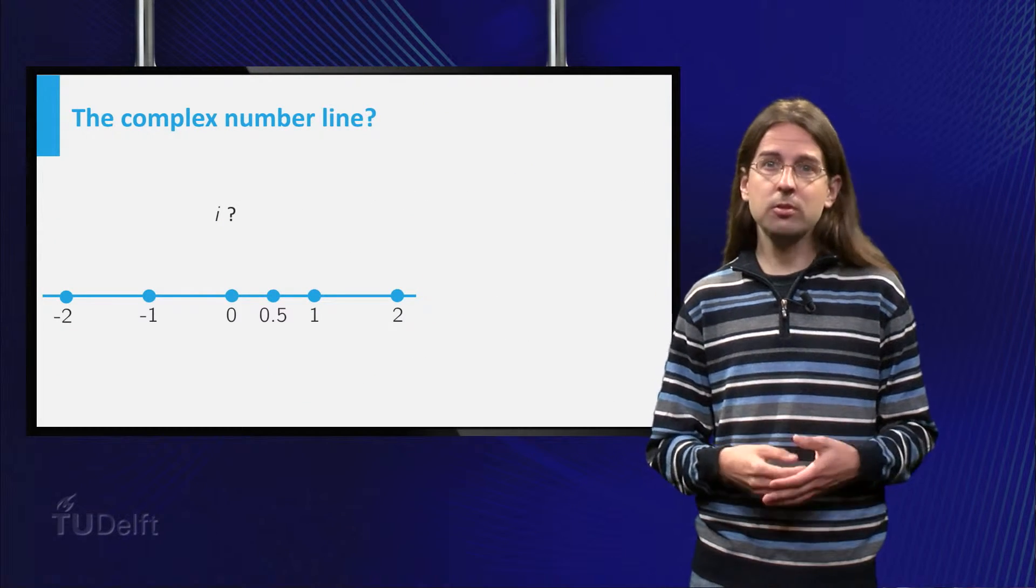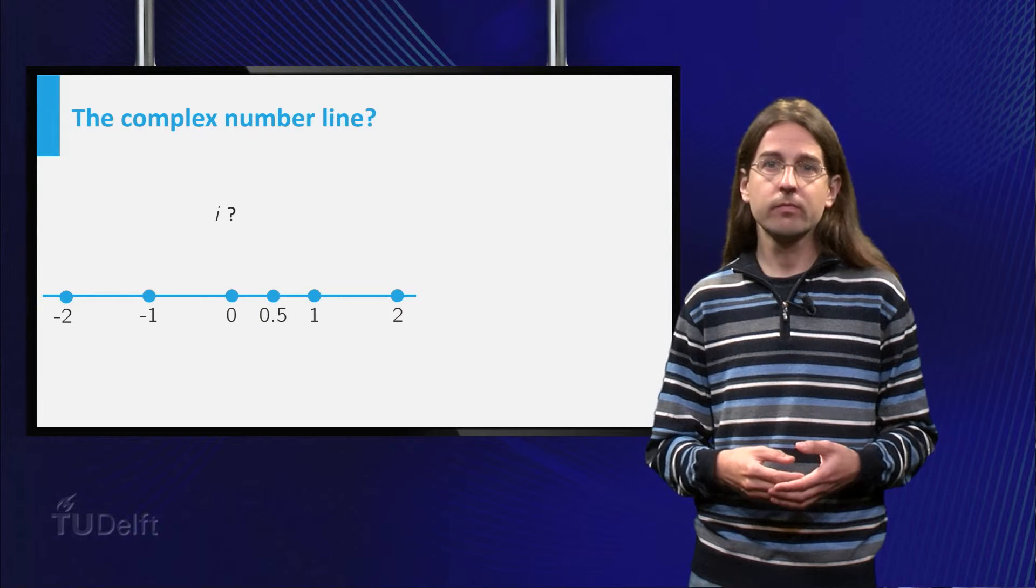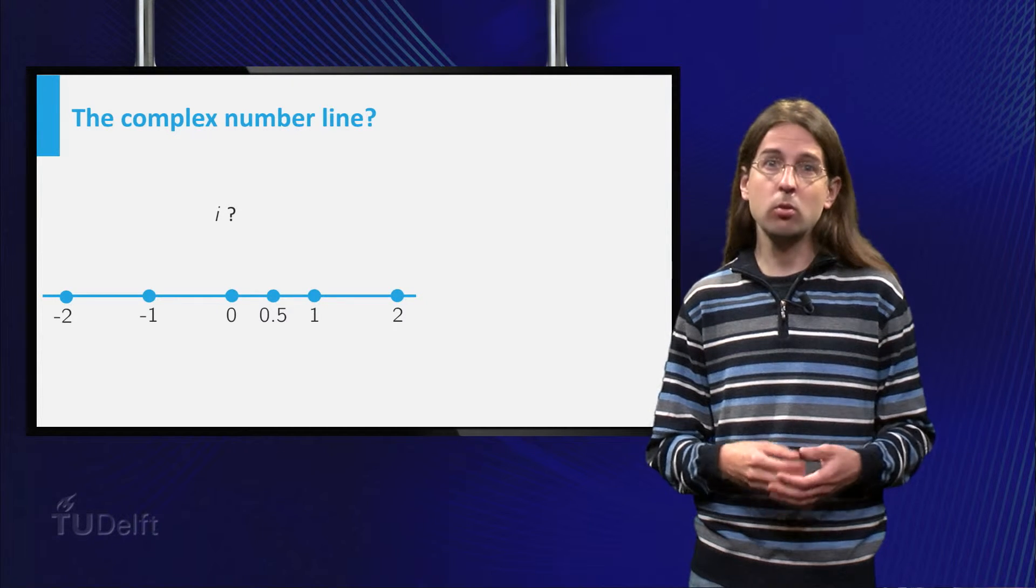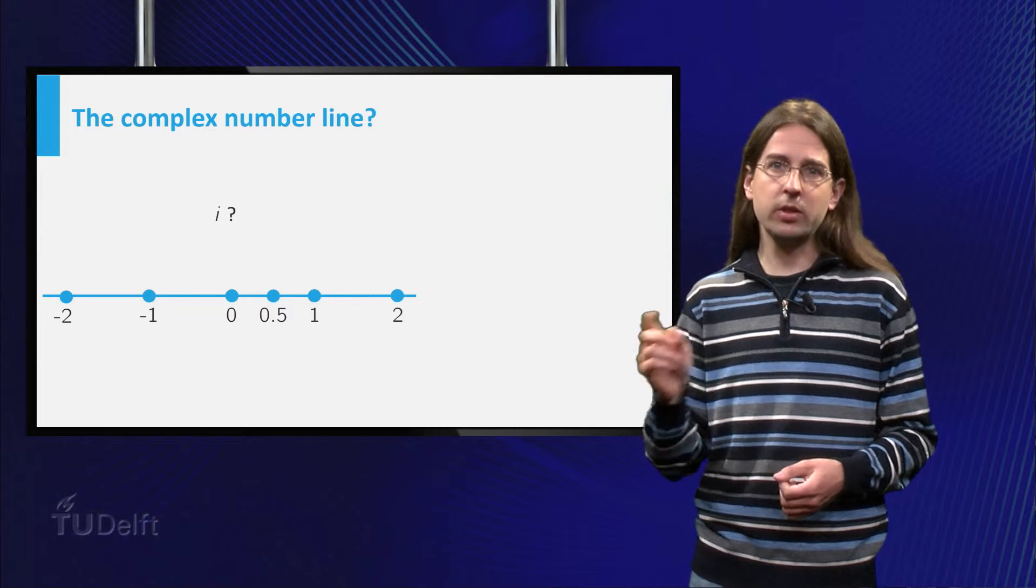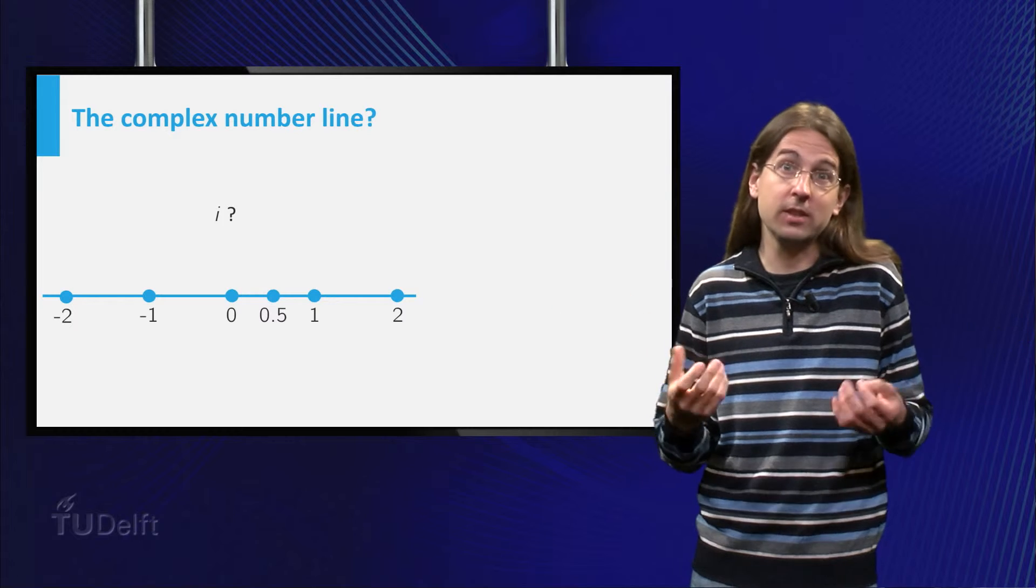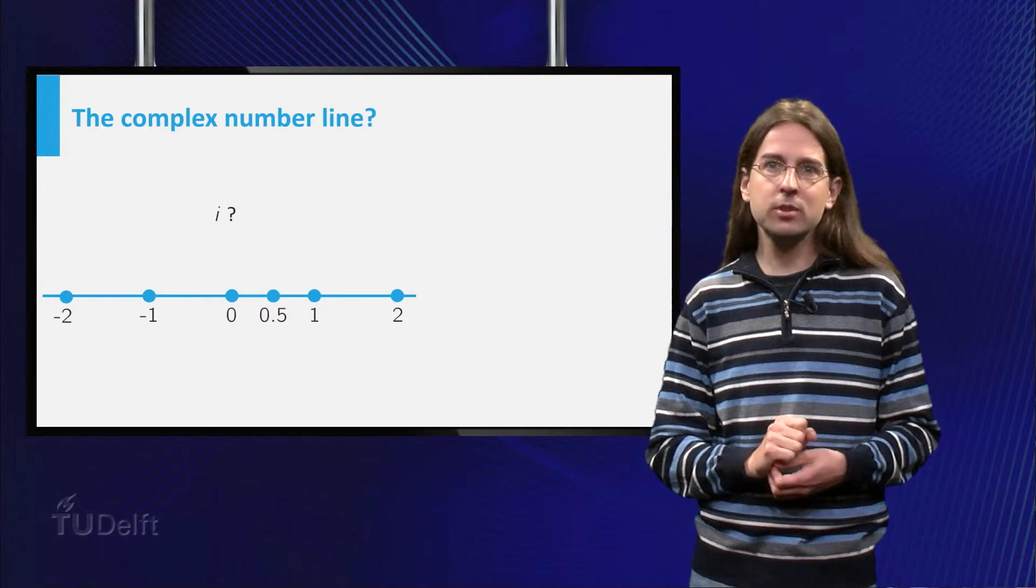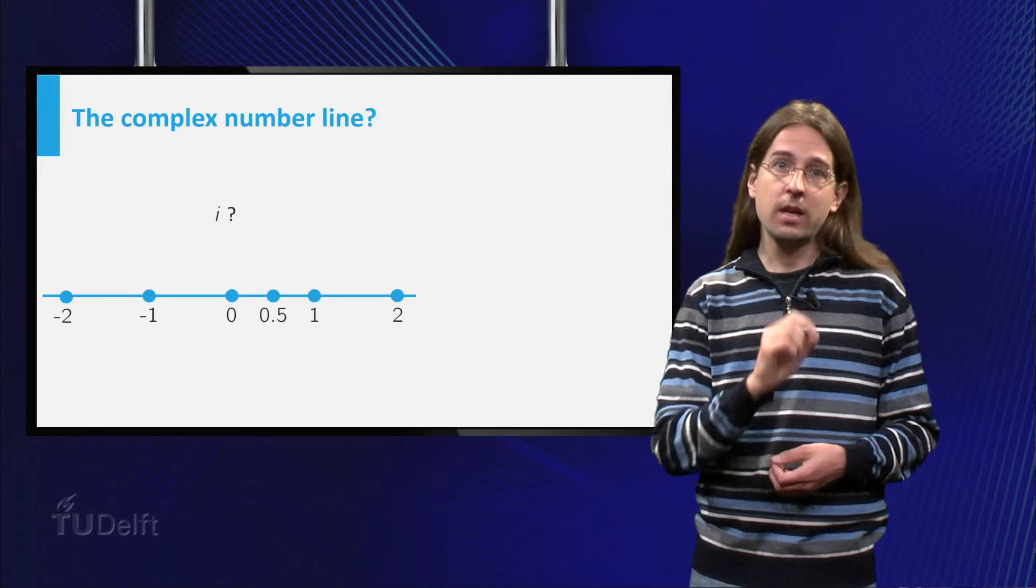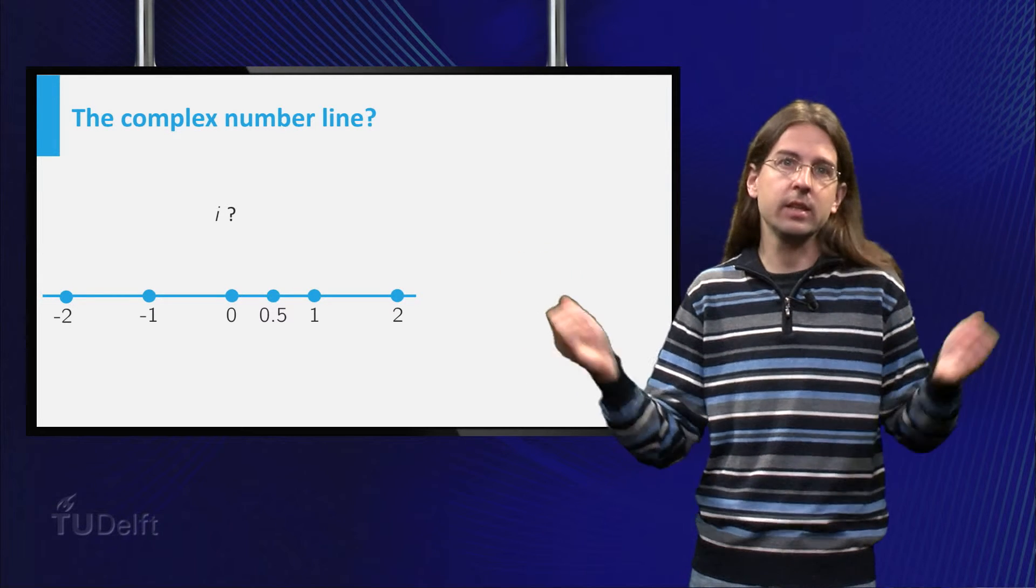Let us now try to find a visual way of thinking about complex numbers. You know that you can use the number line to represent all real numbers. Every real number has a spot on this line. Zero is in the middle, not so far as an infinite line has a middle. One is slightly to the right of zero, minus one slightly to the left of zero, and one half in between zero and one.